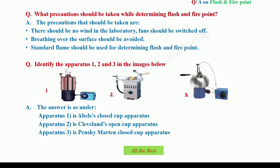What precautions should be taken while determining the Flash Point and Fire Point? The precautions are: there should not be any wind in the laboratory — fans should be switched off. There should not be any breathing over the surface of the oil — this should be avoided. Crowding should be avoided as it may disturb the vapors. Also, a standard flame should be used for determining the Flash Point and Fire Point.